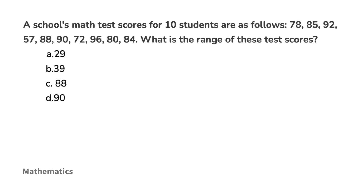A school's math test scores for 10 students are as follows: 78, 85, 92, 57, 88, 90, 72, 96, 80, and 84. What is the range of these test scores? This is a useful statistical measurement showing the difference between the highest and lowest scores. Try it out and come back when you have your response.